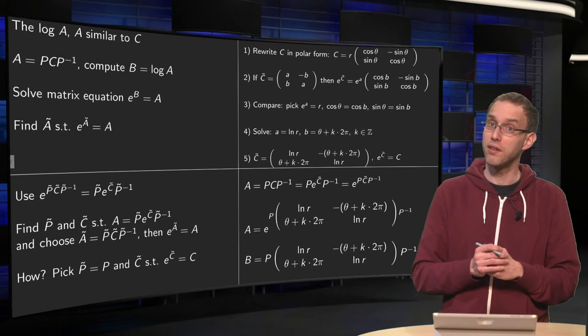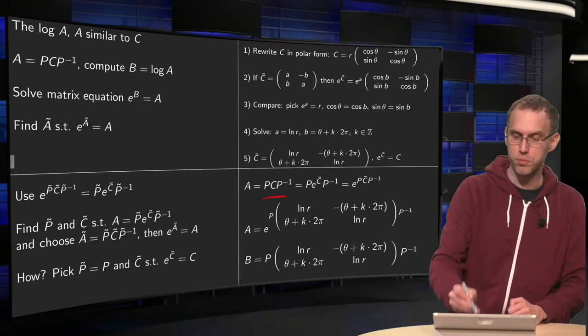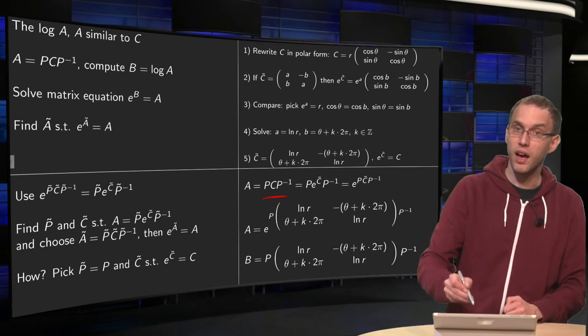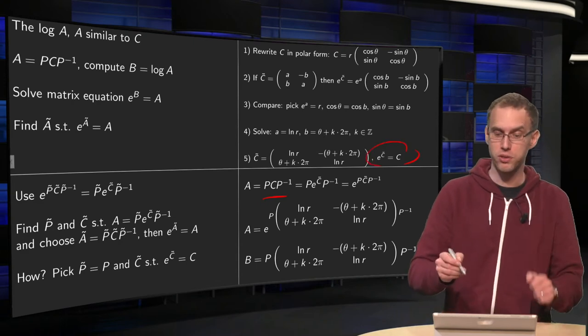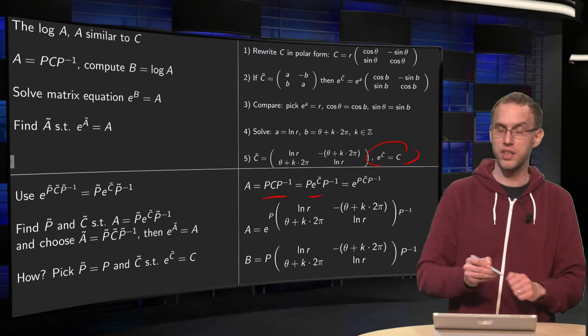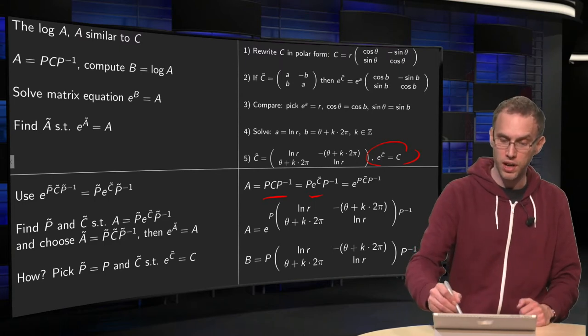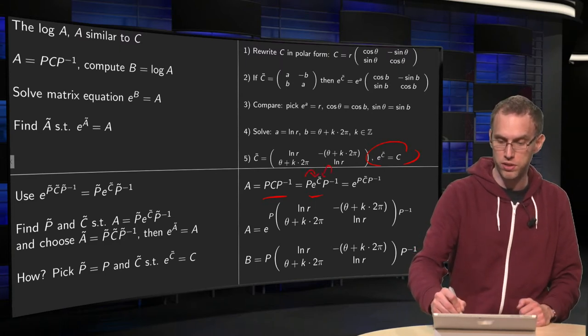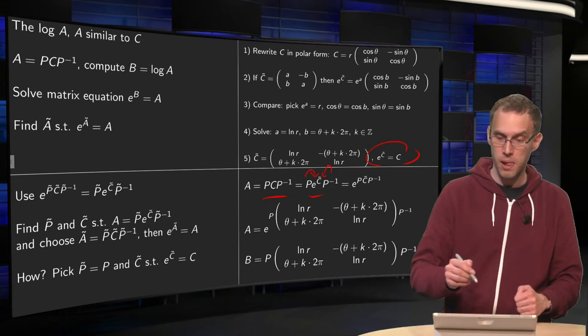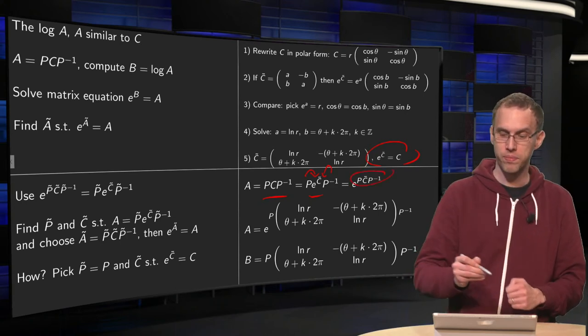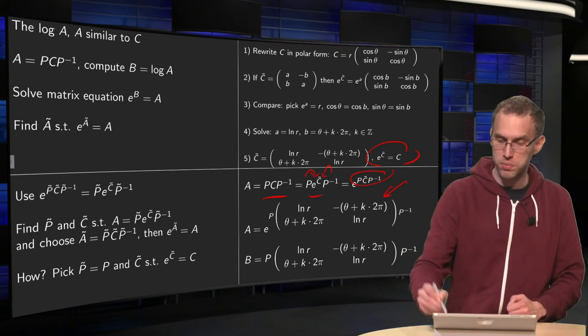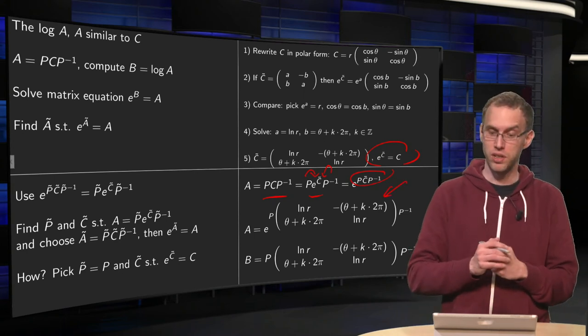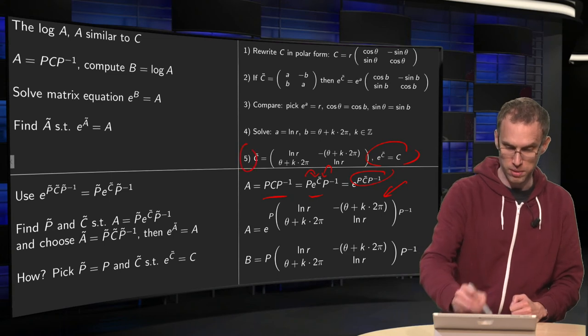And then combine everything, well you know A equals PCP inverse, your C equals e to the power of C̃, you just found your C̃, so you replace the C over here, and due to the lemma you could take the P's and P inverses inside the exponent. And then you are over here. And here we have the explicit expression for your C̃ that we found in step 5 over there.